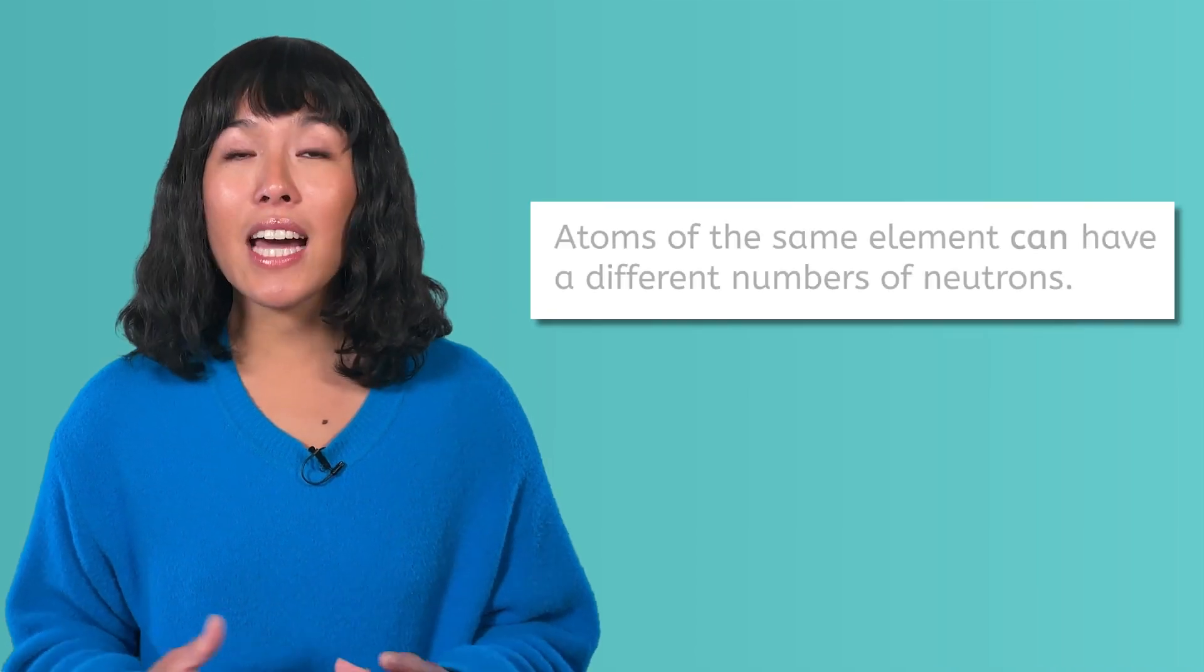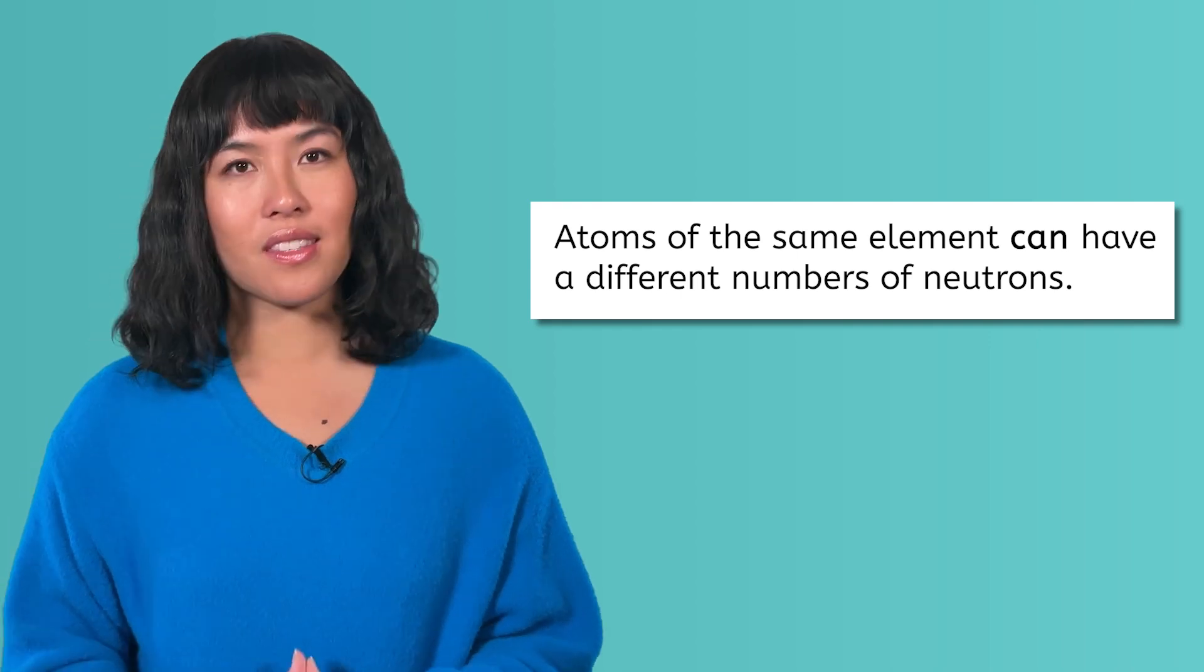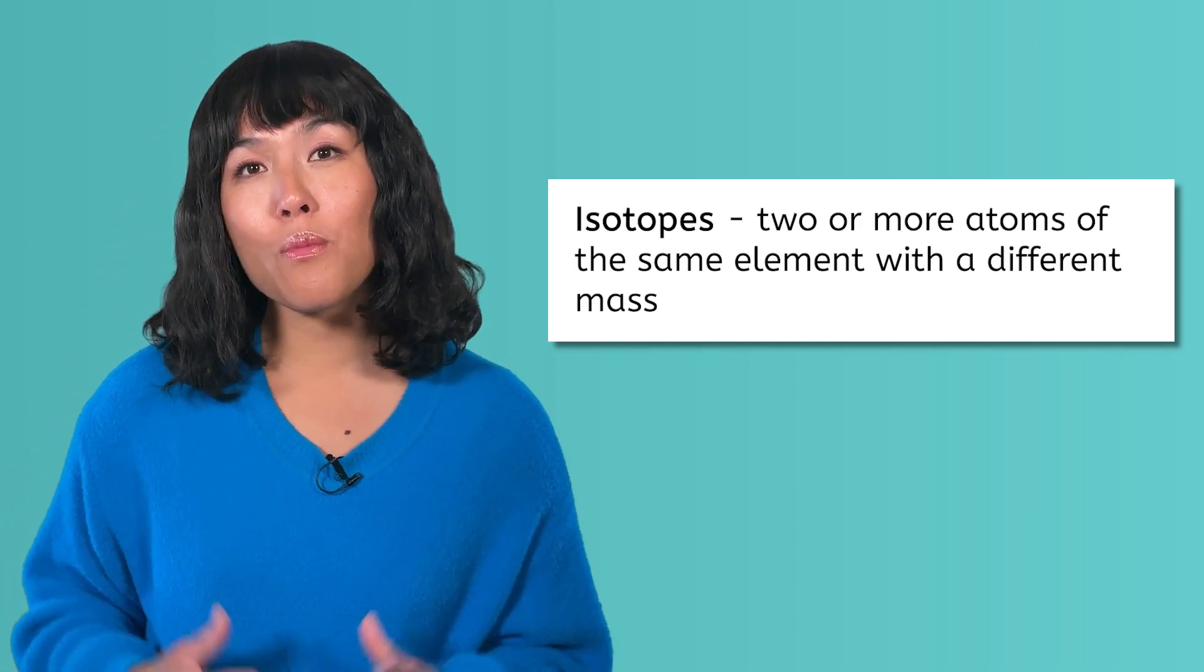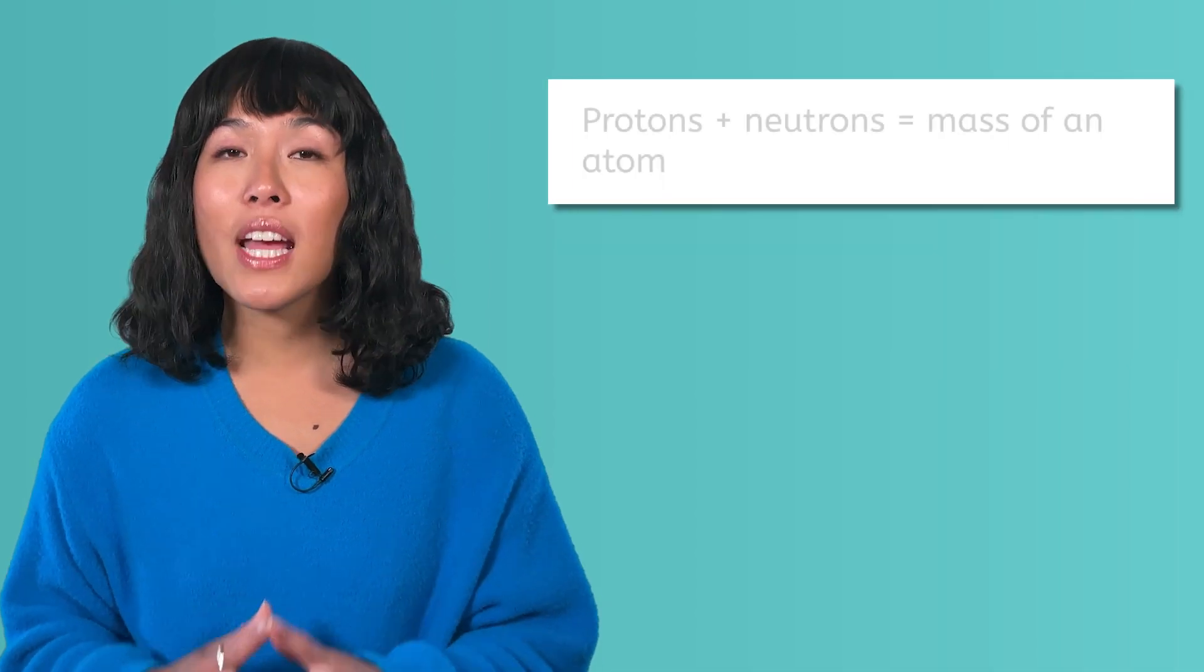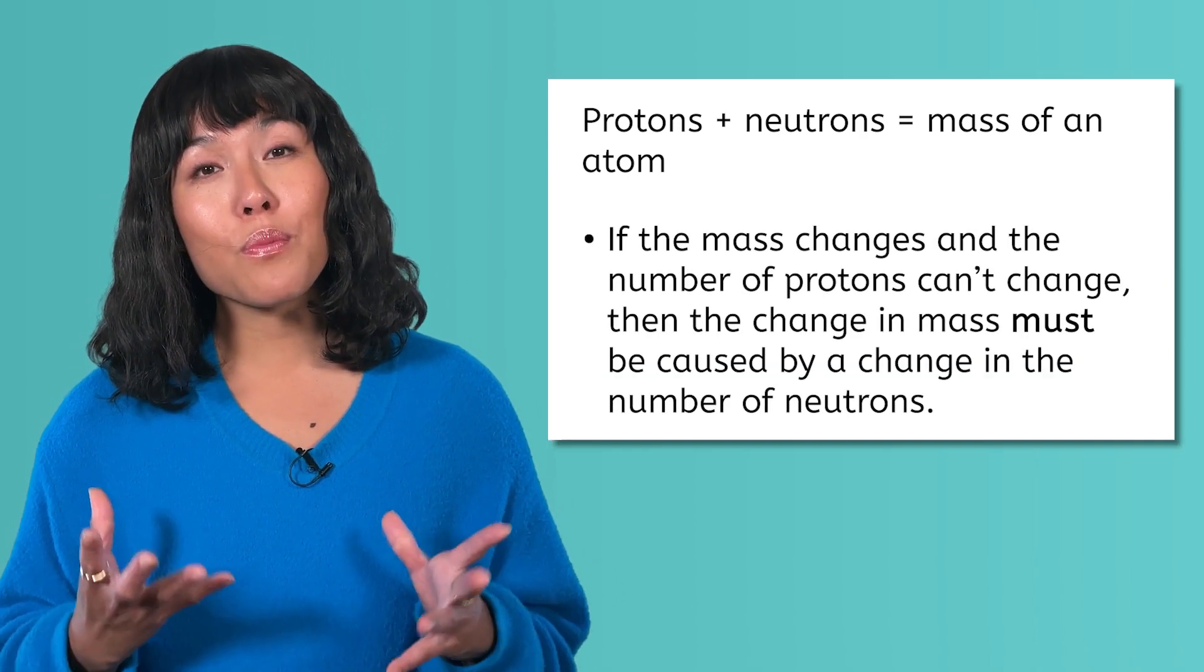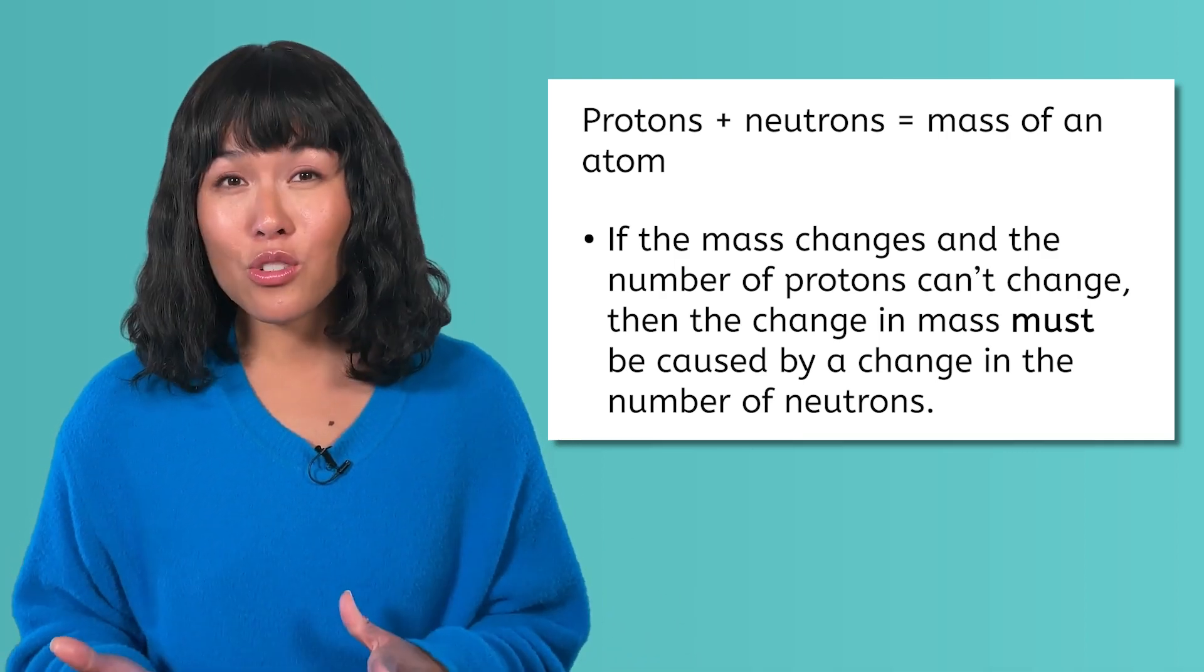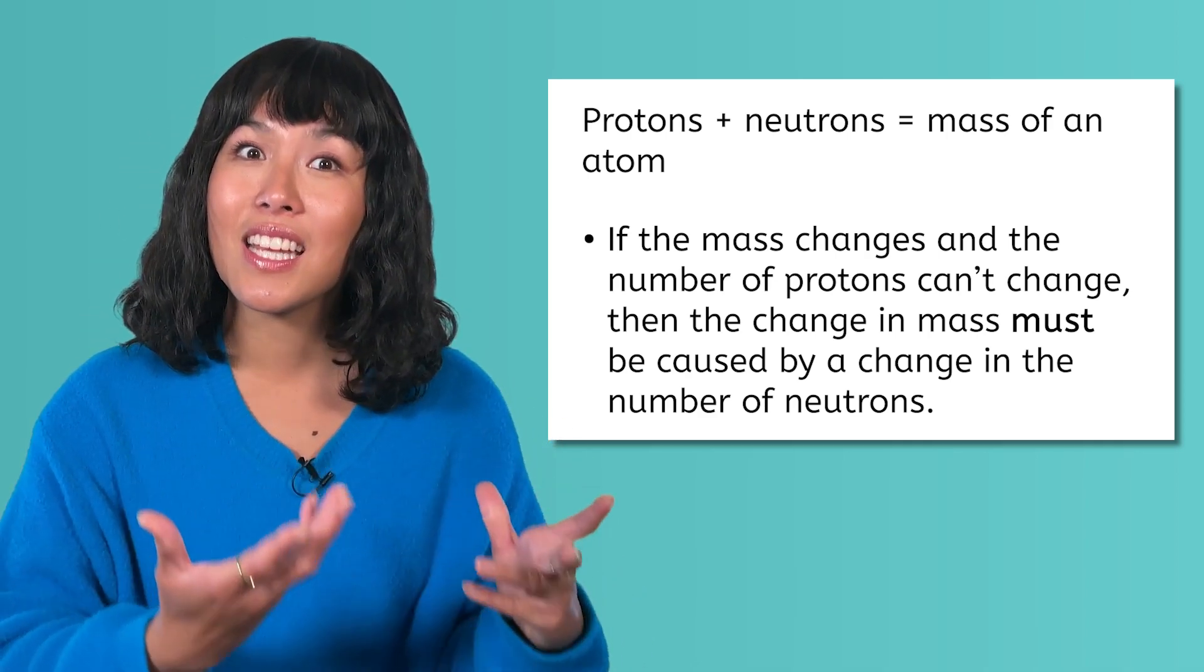What about the neutrons? We also learned in that same lesson that atoms of the same element can have a different number of neutrons. These variations of elements are called isotopes. Isotopes are two or more atoms of the same element with a different mass. The only way to change the mass of an atom and have it remain the same element is to change the number of neutrons. This is because only protons and neutrons contribute to the mass of an atom, since electrons are too small to count, and changing the number of protons changes the identity of the atom.